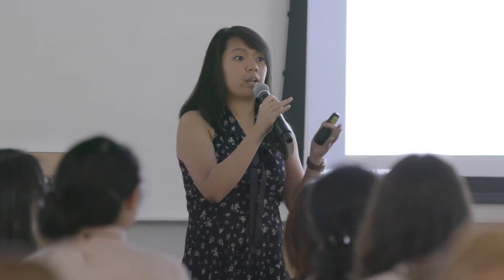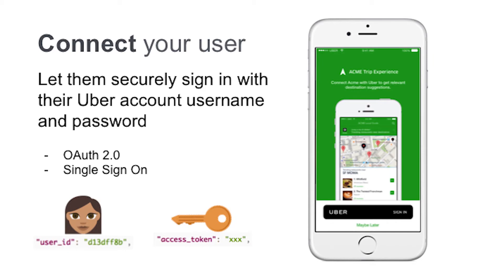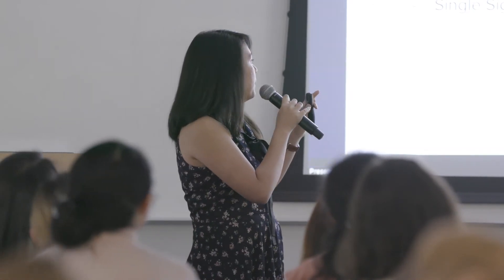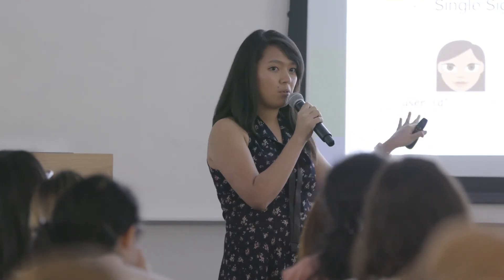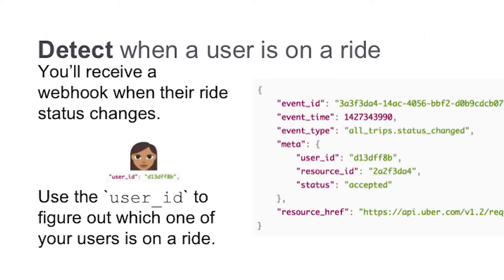Now it's time to connect your user. Somewhere in your app, you'll have to prompt your user to connect their Uber account to yours. When they click the sign-in button, they'll be shown a permission screen — this is very important because it allows your user to see what information is shared between the API and your app. You can do this with OAuth 2.0 or single sign-on. At the end of this process, you get two pieces of information: the user's Uber user ID and their access token. You can associate and save both of these, as we'll use them when we detect when a user is on a ride.